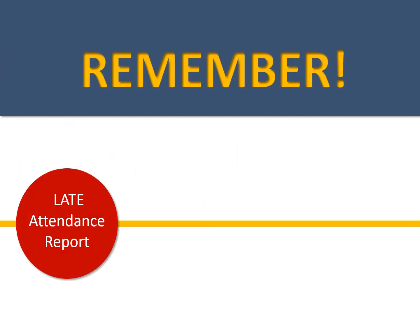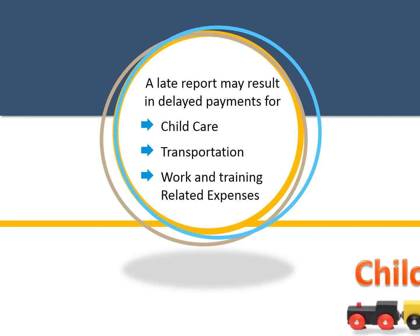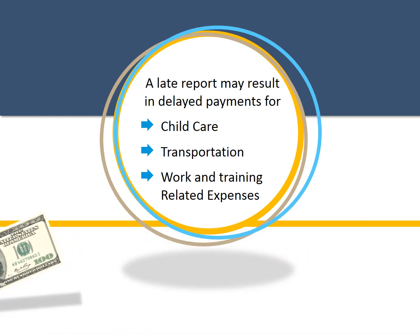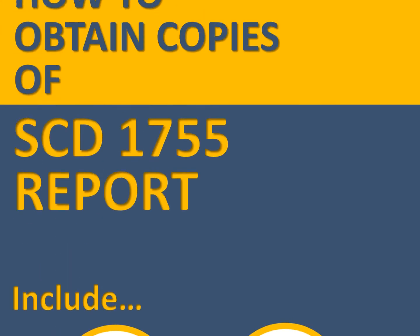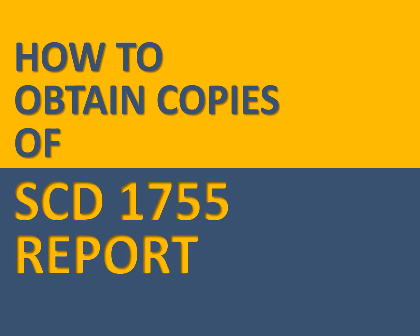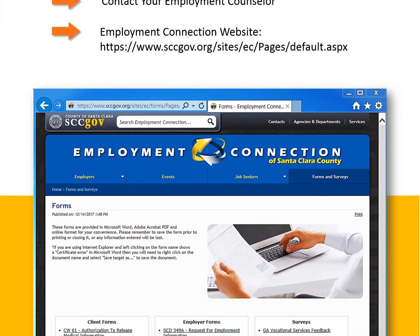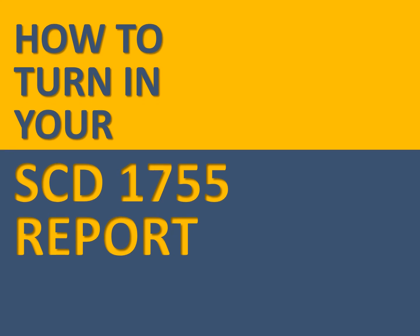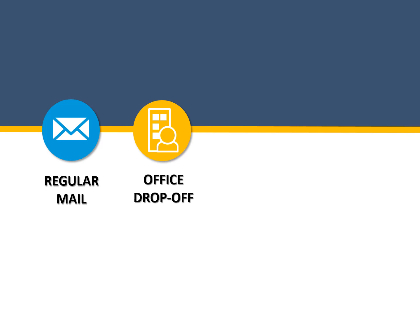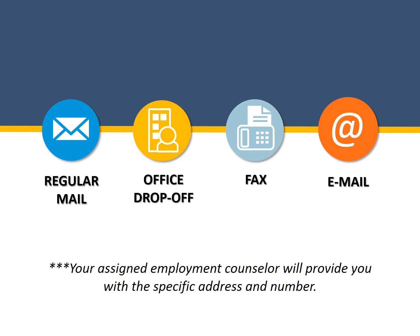Remember, a late attendance report results in non-compliance which may result in discontinuance of your CalWORKs cash aid. A late report may also delay payments for child care, transportation, and work and training related expenses. If you are employed, include copies of your paycheck stubs worked during the attendance report month. You may obtain copies of your SED 1755 forms by contacting your employment counselor or by downloading the forms from the Employment Connection website. Your completed attendance and child care billing forms may be returned through regular mail, dropped off in person at your employment counselor's office, faxed, or returned electronically such as via email. Your employment counselor will provide you with the office address and phone number.